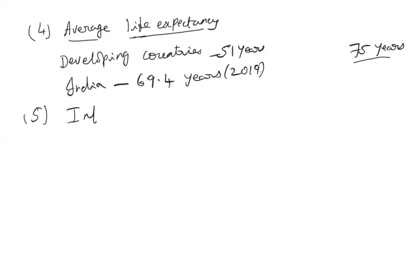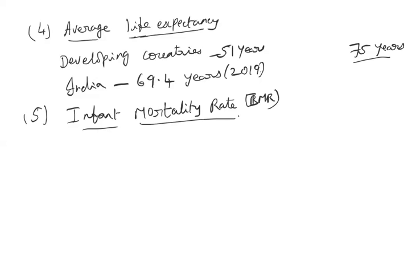Life expectancy and infant mortality rate together indicate the health standards of a country. If life expectancy is low and infant mortality is high, health standards are poor because these are the most vulnerable groups. The infant mortality rate (IMR) is the number of children dying per thousand children born, calculated before reaching age one or five. The world average is 28 per thousand.